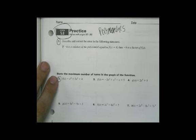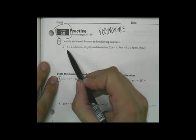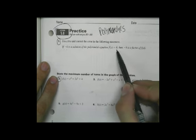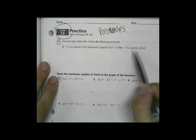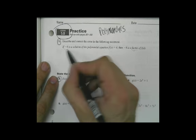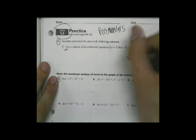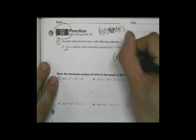Real quick, I can answer this one. If negative 6 is a solution of the polynomial equation f of x equals 0, then negative 6 is a factor? Well, not really. If negative 6 is a solution of f of x equals 0, what a factor will be will be a factor which should be x plus 6.